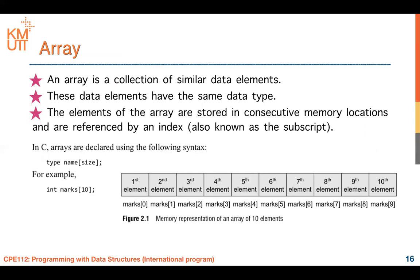Today I'll briefly show you the idea of each data structure we are going to study: arrays, linked lists, trees, and graphs. Starting with arrays — what does an array mean? An array is a set of similar data elements of the same data type. The elements of an array are stored in consecutive memory locations and are referenced by an index, also called a subscript.